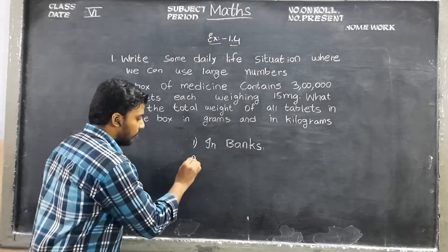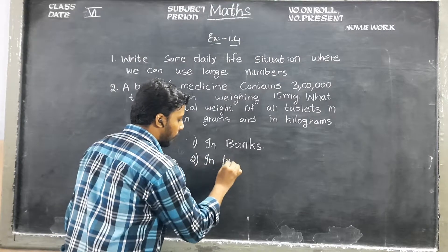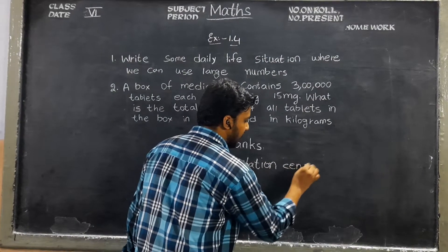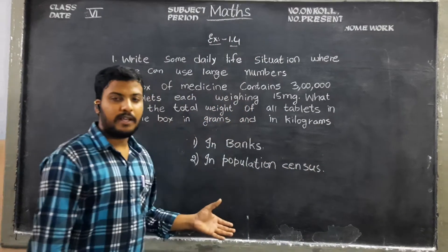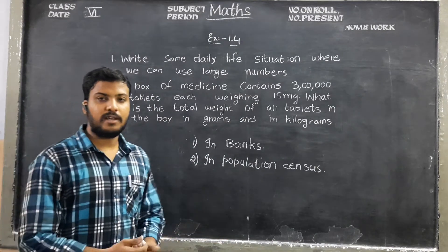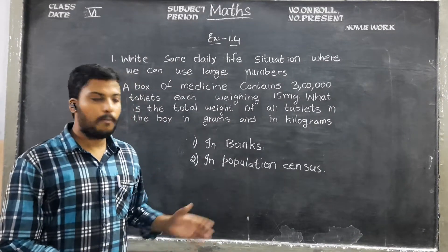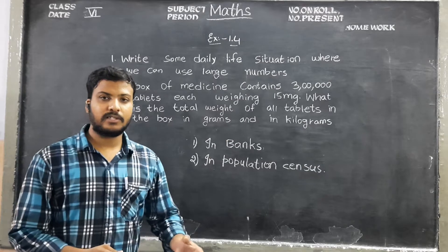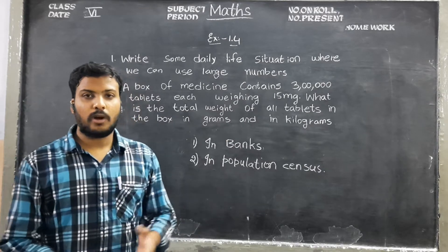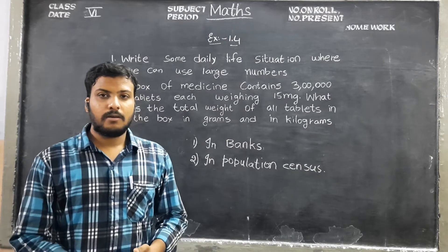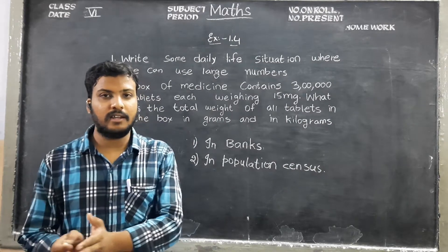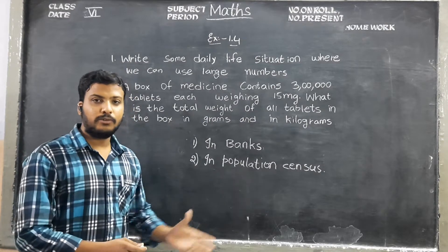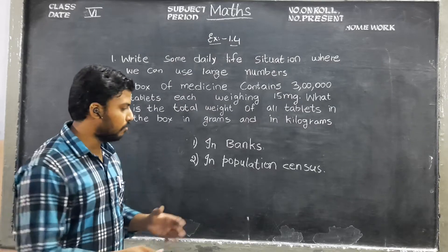And population census. What is population census? For every 10 years or 5 years, there will be a survey — a population census survey — to find the total population of our country. Right now, the population of India is more than 130 crores, nearer to 140 crores. So in population census, we will use large numbers.